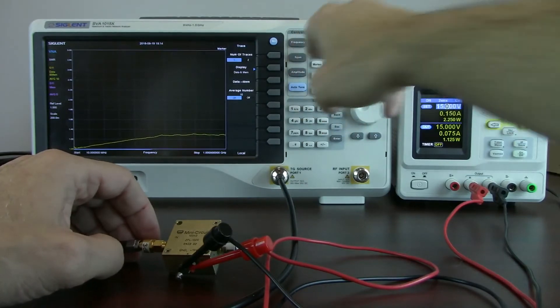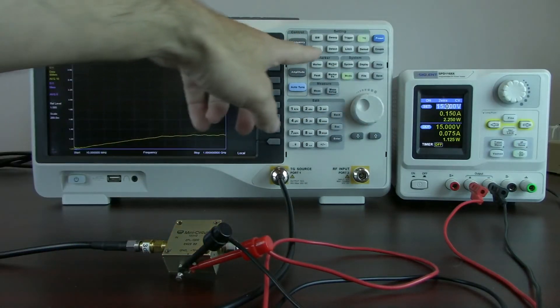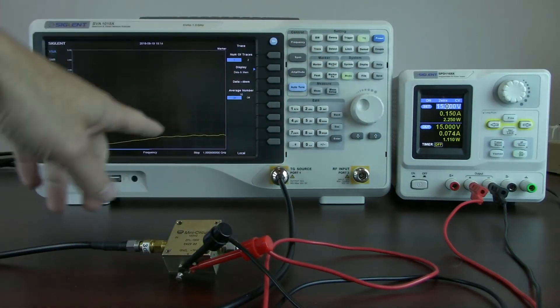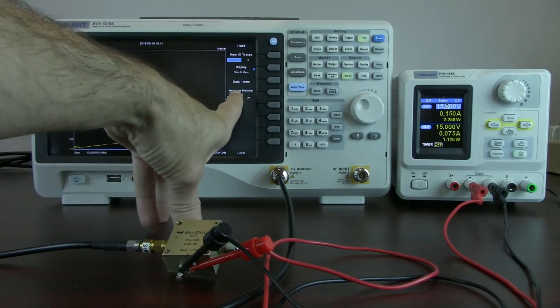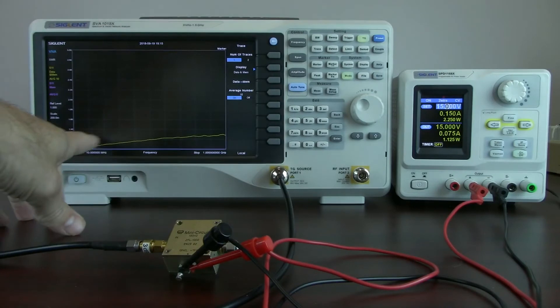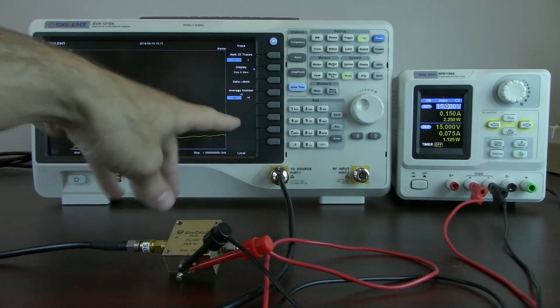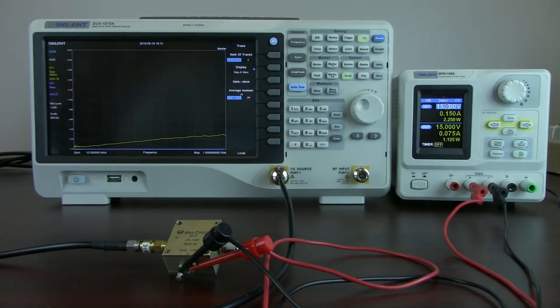So, by selecting trace, I can now pull in different trace values and show different traces on the display. I set the average number to 10. And so you could see we've got a nice curve here that's very, very close to what we see on the datasheet.